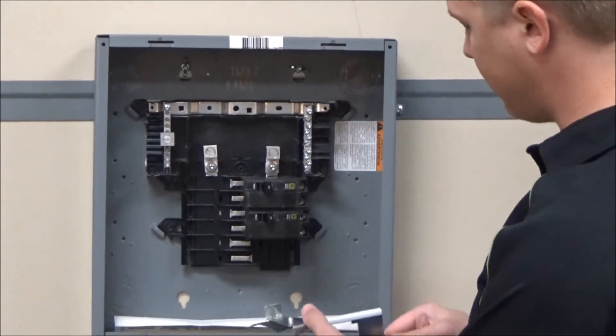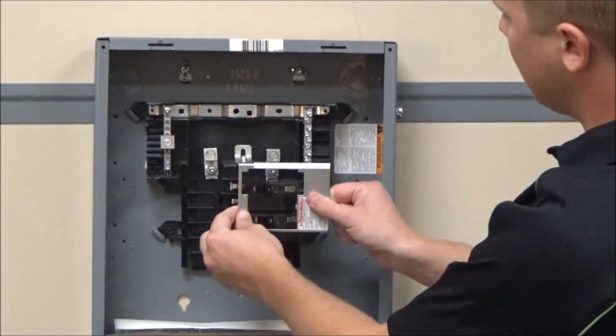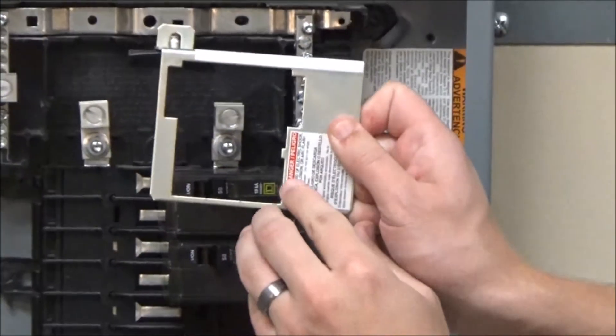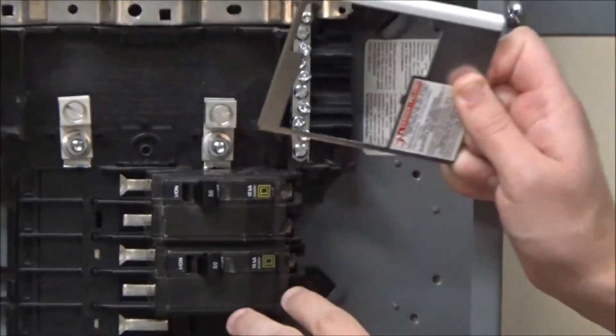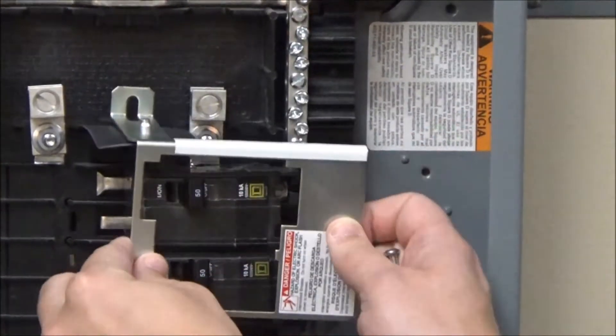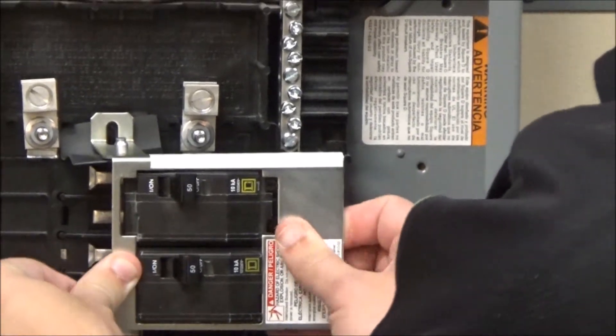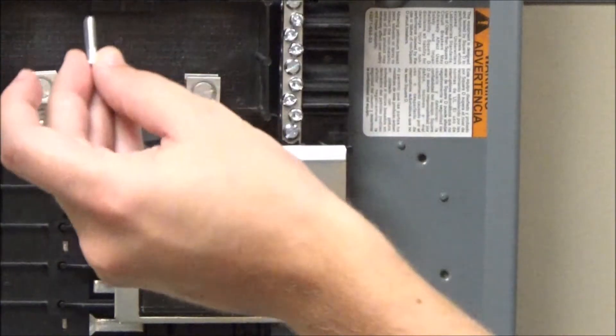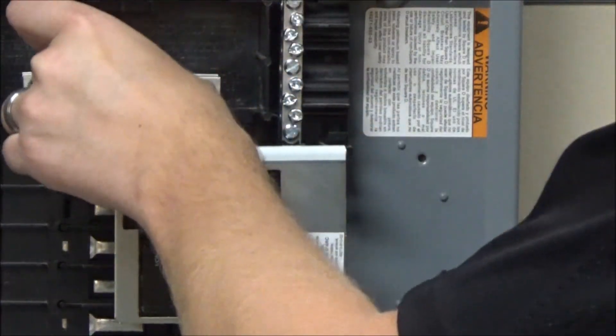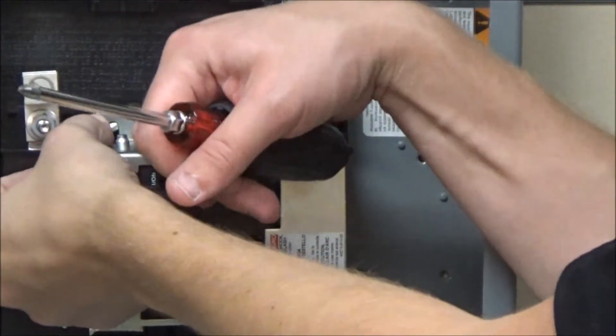To install the retaining kit, you'll need to slide this tab into the slot on the bottom breaker, and then install the new interior mounting screw into the hole right here.